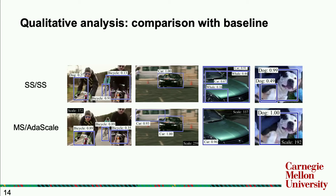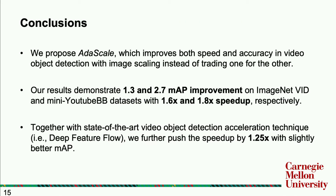Qualitative comparison between the baseline (single-scale training, single-scale testing) and AdaScale testing shows that for some images false positives are reduced, and for some images true positives are even improved. In conclusion: we propose AdaScale, which improves both speed and accuracy in video object detection instead of trading one for the other. We demonstrate 1.3 and 2.7 mean average precision improvement on ImageNet video dataset, and on a mini YouTube bounding box dataset with 1.6x and 1.8x speedup respectively. Combined with the state-of-the-art Deep Feature Flow acceleration technique, we achieve an additional 1.25x speedup with slightly better mean average precision. Thank you, I'm open to questions.